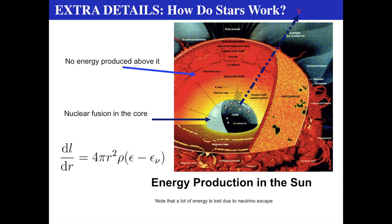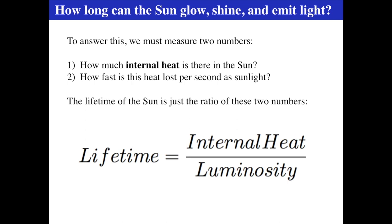We're talking about energy production in the core of the Sun — that last stellar structure equation: how much luminosity dL is produced in a little shell of radius dr at distance r, with matter density rho. Epsilon is the total radiative luminous energy, and epsilon-sub-nu is what escapes by neutrinos. So what's being lost, what's being seen, and how do we get light from the Sun?